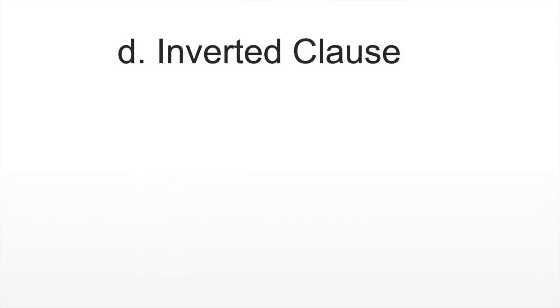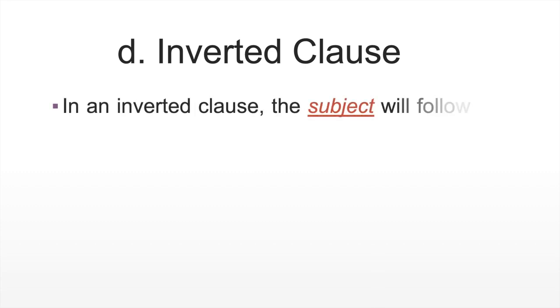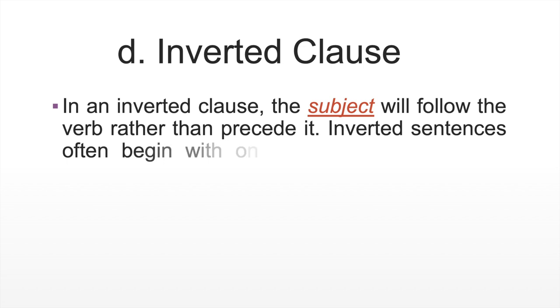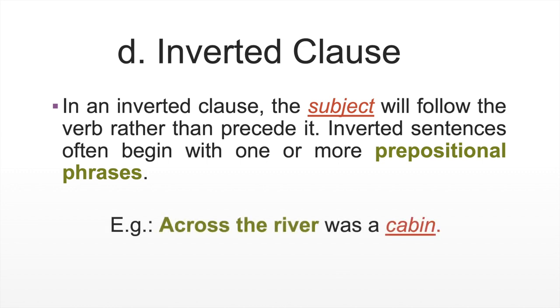The following section deals with inverted clauses. In an inverted clause, the subject will follow the verb rather than precede it. Inverted sentences often begin with one or more prepositional phrases. For example, across the river was a cabin. As we said before, the prepositional phrase cannot be the subject of a sentence. Therefore, cabin is the simple subject of the sentence.